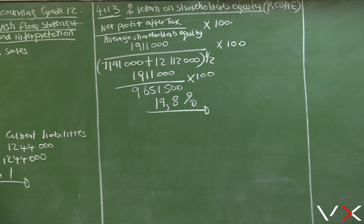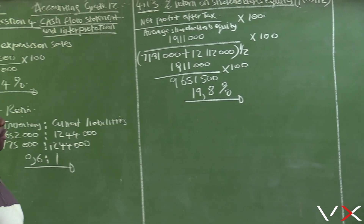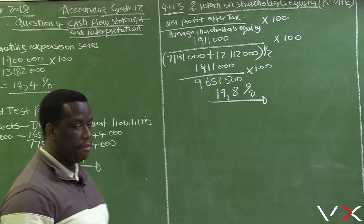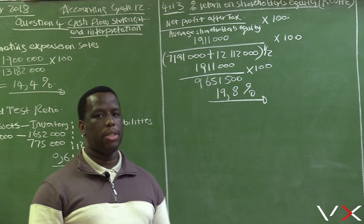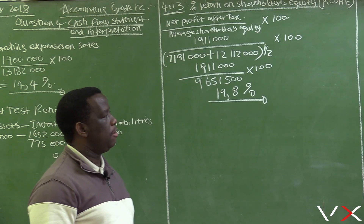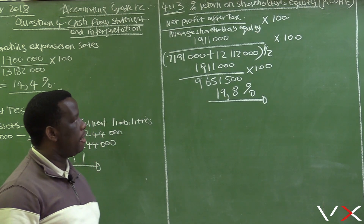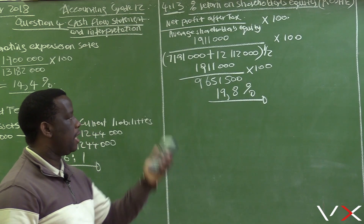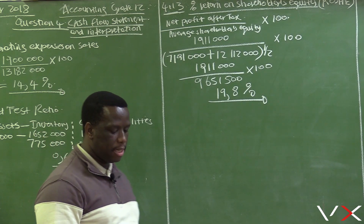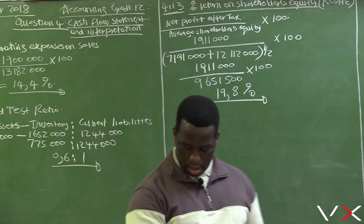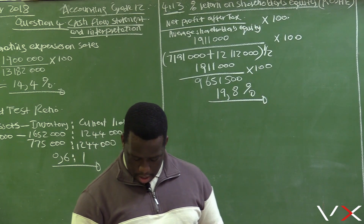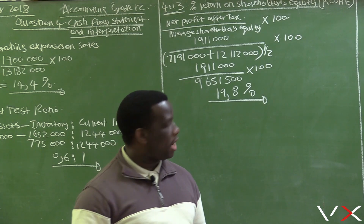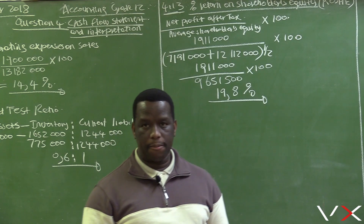19.8% is a good return. We compare it to an alternative investment like a fixed deposit, which typically earns 8% to 10% interest. Since 19.8% is bigger than the alternative investment return, investing in this business is a better financial decision.